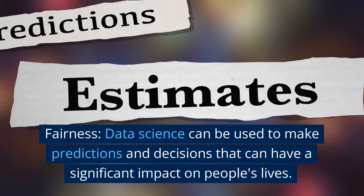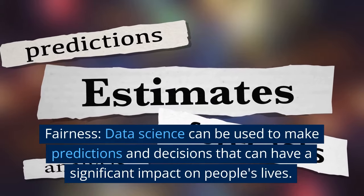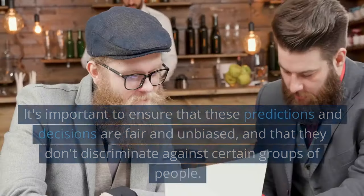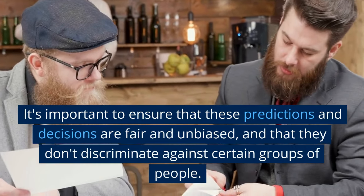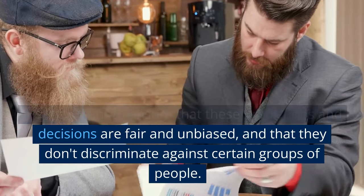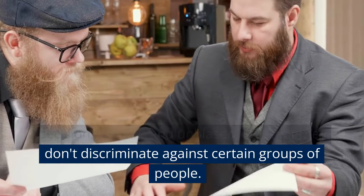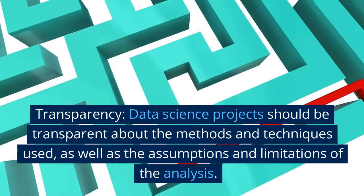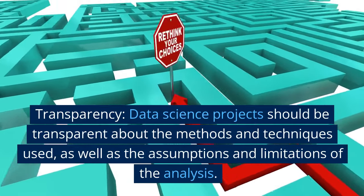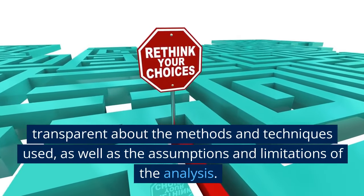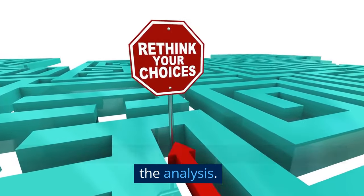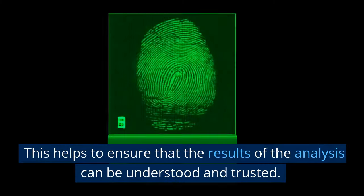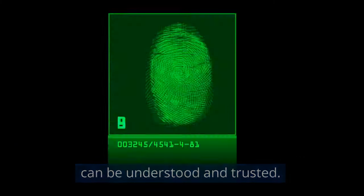Fairness: data science can be used to make predictions and decisions that have a significant impact on people's lives. It is important to ensure that these predictions and decisions are fair and unbiased, and that they don't discriminate against certain groups of people. Transparency: data science projects should be transparent about the methods and techniques used, as well as the assumptions and limitations of the analysis, to ensure results can be understood and trusted.